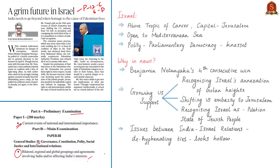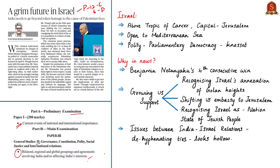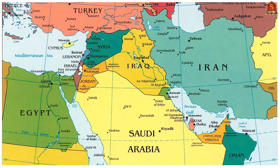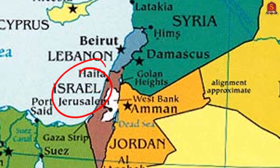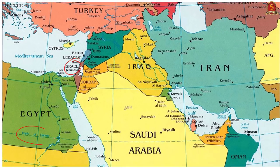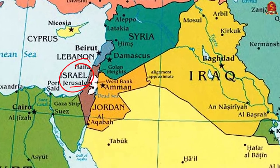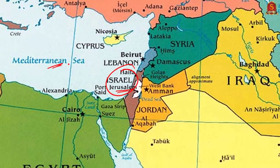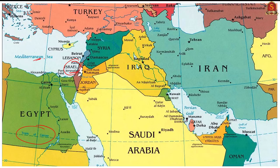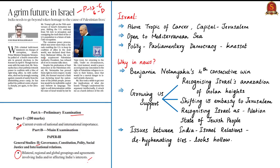Before going into the news article, let us know about the geographical significance of Israel. As seen in the map, it is located above the Tropic of Cancer and its capital city is Jerusalem. It is open to the Mediterranean Sea. Coming to its polity, Israel follows a parliamentary democracy and its legislature is called the Knesset.